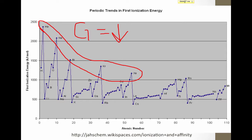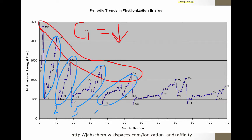Looking now at periods, each of these pieces here represent going across a period. This is period 1, period 2, period 3, period 4, and so on. Notice as we go across a period, ionization energy increases.